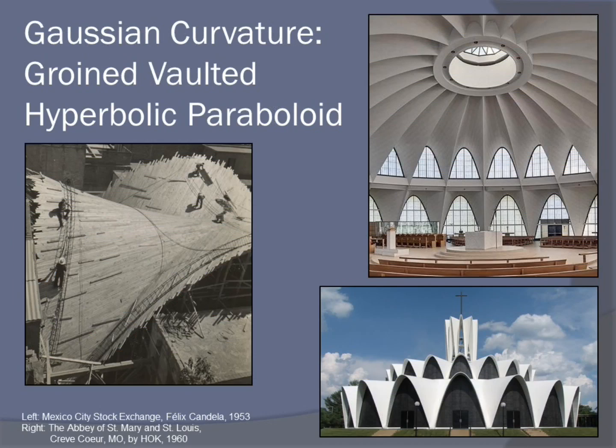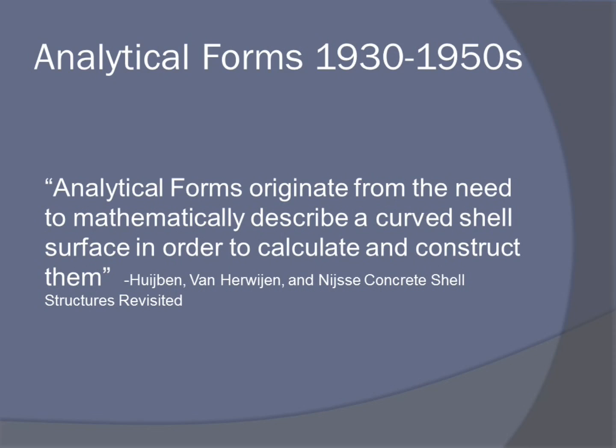What's the groin vaulted hyperbolic paraboloid? It's kind of complicated — how does it translate into what we know about our piece of paper? Basically, it's a crumpled piece of paper. It's the most visually complicated and one of the more complicated to construct. It's a series of hyperbolic paraboloids joined together by a circle — kind of like a wave around a centerpiece. That covers Gaussian forms.